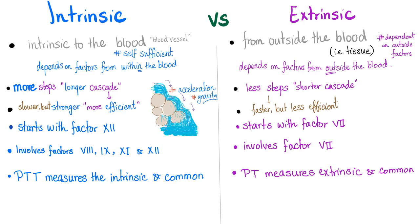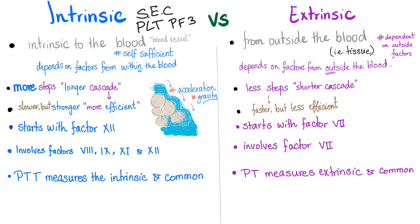Quick comparison between the intrinsic and extrinsic pathway. Intrinsic means we need something intrinsic to the blood — something from within, hashtag self-sufficient. That something from within is the subendothelial collagen. The extrinsic pathway needs something from outside called tissue factor, also known as tissue thromboplastin, also known as tissue phospholipid. The intrinsic pathway has more steps — a longer cascade, more sufficient. It starts with factor 12. The extrinsic pathway only has factor 7 — faster but less efficient. What activates the intrinsic pathway? Subendothelial collagen, platelet factor 3, and the great high molecular weight kininogen, which is the topic of today's video.